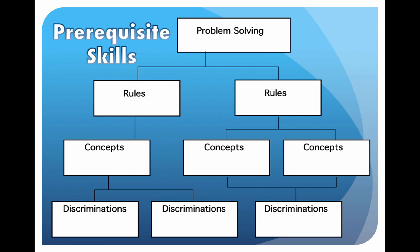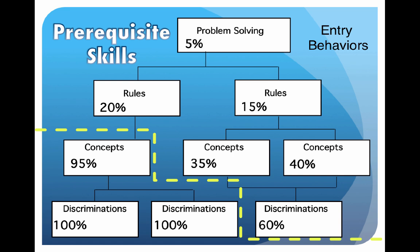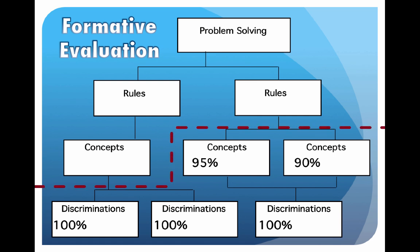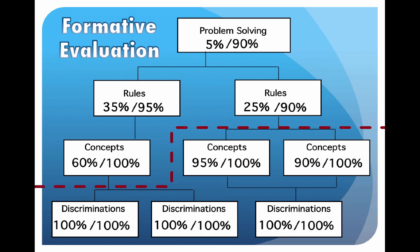Next, we decide what prerequisite skills we think students already have by setting an entry behavior line. For example, if we gave them a pretest, we assume they would do well on three concepts, so we set our line there — expecting they would do poorly on the rest and would need instruction. The entry behavior line does not have to be straight across. When we've completed our formative evaluation with both pretest and posttest, we may find those assumed easy concepts were different, requiring us to reset the entry behavior line. Our instruction worked well — look at the difference between pretest and posttest scores.